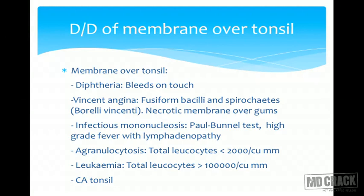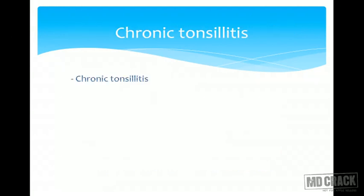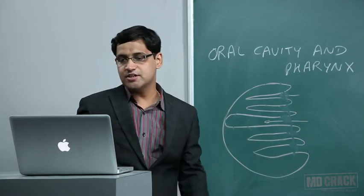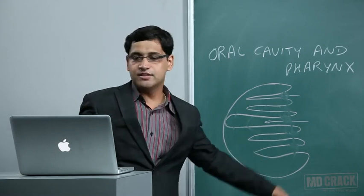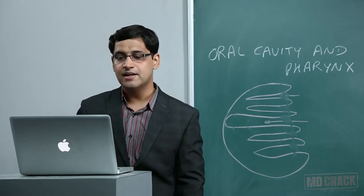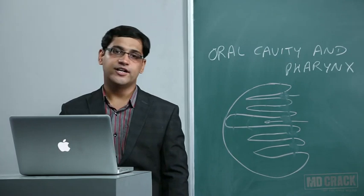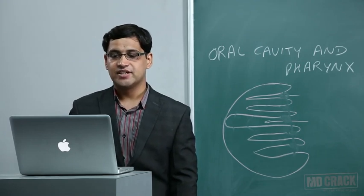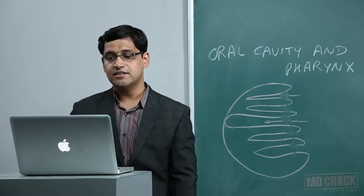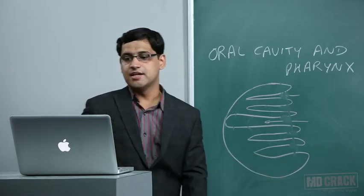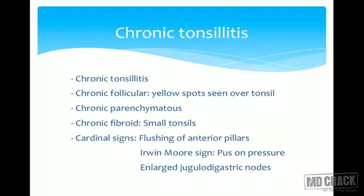Chronic tonsillitis can be chronic follicular, chronic parenchymatous, or chronic fibroid — in which the tonsil decreases in size after recurrent inflammation. Three cardinal features of chronic tonsillitis: flushing of the anterior pillars, Irwin-Moore sign (pus expressed from crypts on pressing the tonsil), and enlarged jugulodigastric nodes.